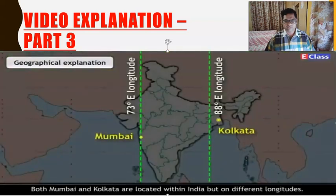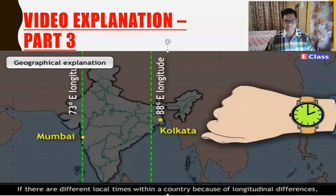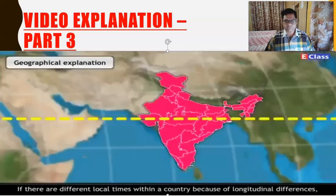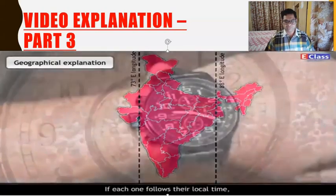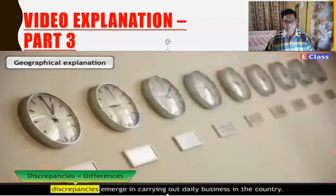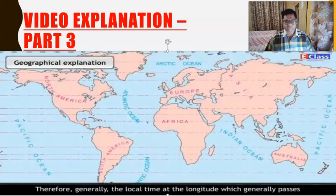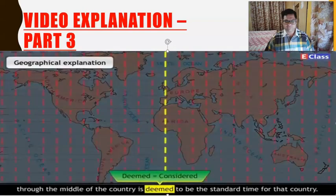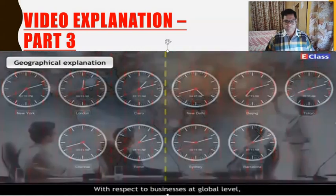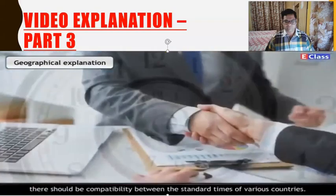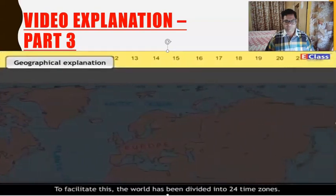Both Mumbai and Kolkata are located within India but on different longitudes, and their local times differ by an hour. If there are different local times within a country because of longitudinal differences, then there will be a lack of synchronization in the routine activities of the country. If each one follows their local time, discrepancies emerge in carrying out daily business. Therefore, generally, the local time at the longitude which passes through the middle of the country is deemed to be the standard time for that country. This standard time is used all over the country.